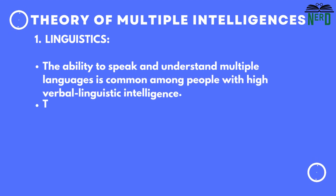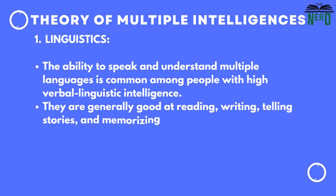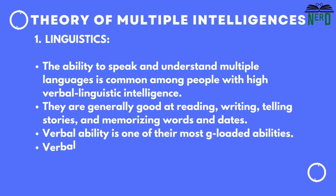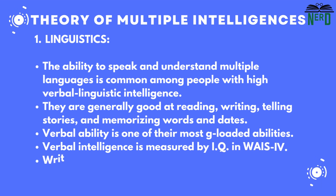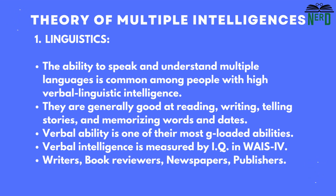First is linguistic. The ability to speak and understand multiple languages is common among people with high verbal-linguistic intelligence. They are generally good at reading, writing, telling stories, and memorizing words and dates. Verbal ability is one of their most G-loaded abilities. IQ tests measure verbal intelligence. They are usually writers, book reviewers, newspaper and publishers.